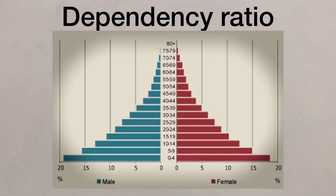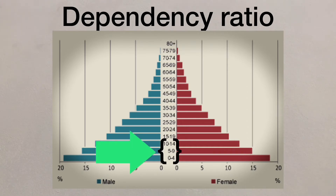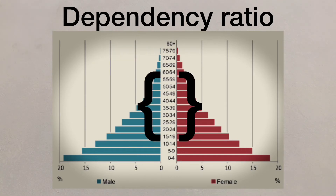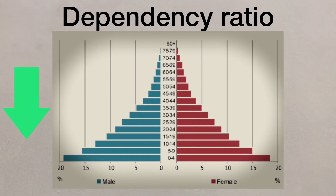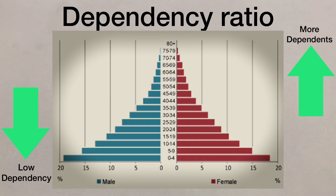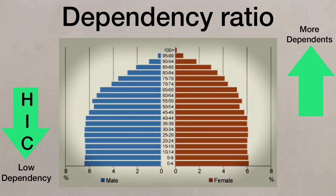The dependency ratio can be seen to an extent on the population pyramid. The dependency ratio looks at the proportion of people who are dependent or economically inactive — those between 0 to 14 and above 65 years old — upon those who are economically active, aged from 15 to 64. Low numbers indicate a low dependency, with higher numbers indicating more people dependent on the working population. Low dependency is more common in HICs than LICs or NEEs.